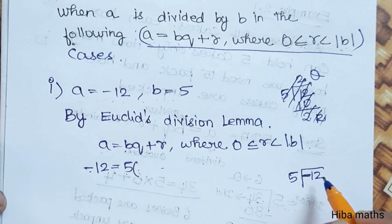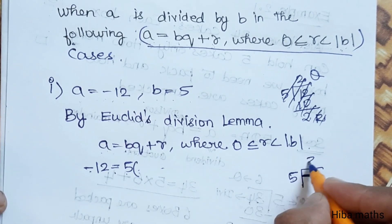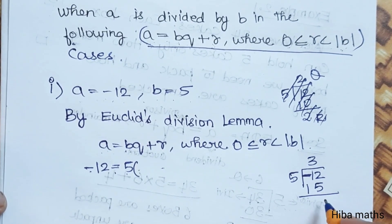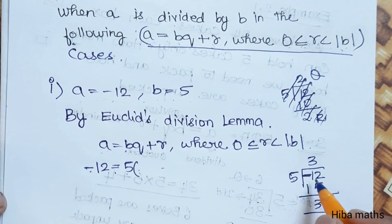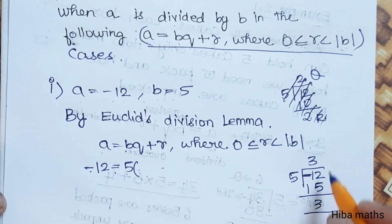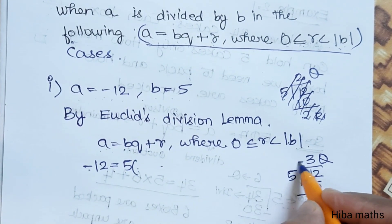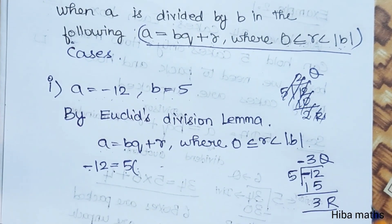Since we have a minus value, we take the next multiple. We take 5 times 3 is equal to 15. So 15 minus 12 is equal to 3. If we do not, we get minus values. So 3 is the remainder, and the quotient will be minus 3. So minus 12 equals quotient times b plus r.